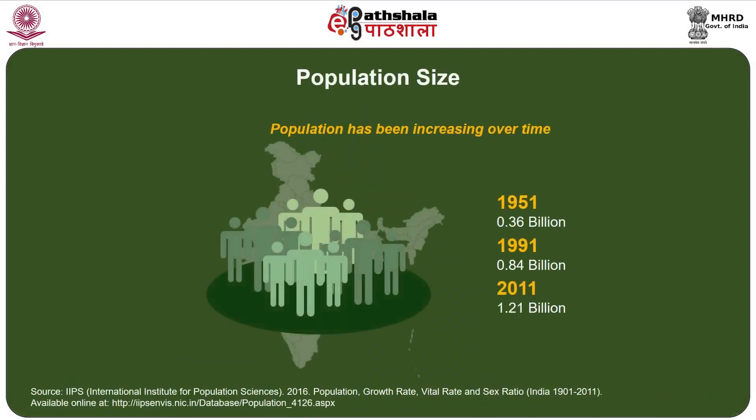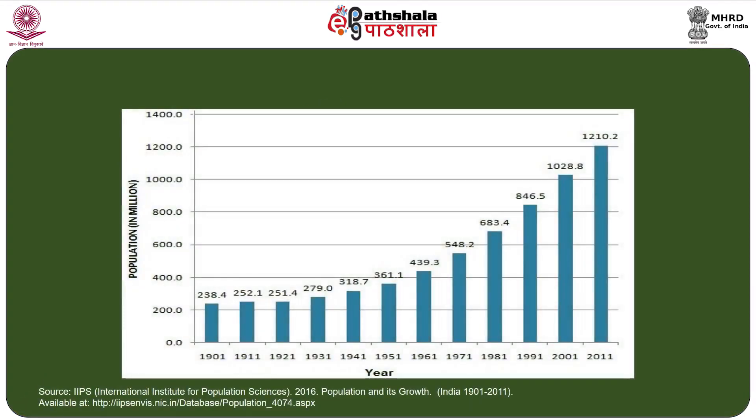If you look at the population size of India, it was 0.36 billion in 1951 and has steadily increased to 0.84 billion in 1991, moving further to 1.21 billion as per the 2011 census. The graph clearly depicts this steady increase, from around 238 million in 1901 to 1028 million in 2001 and 1210 million in 2011, indicating the pace at which population growth is happening in the country.